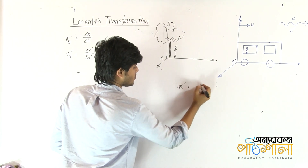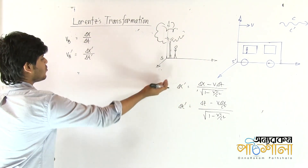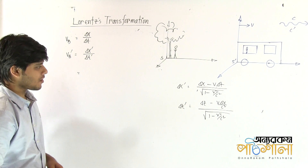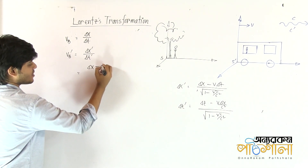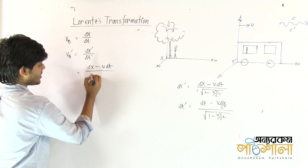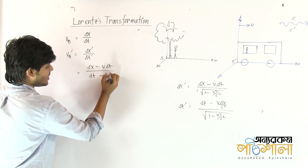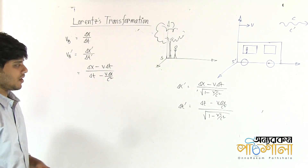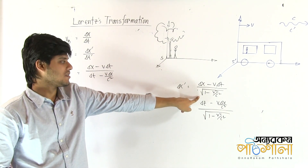Delta x prime transformation. Delta t prime transformation. We have delta x minus v delta t, and we have delta t minus v delta x by c square. This is root over 1 minus v square by c square.